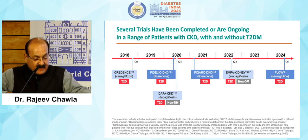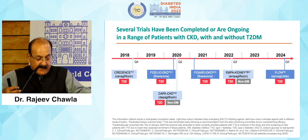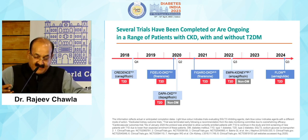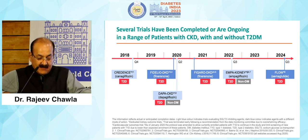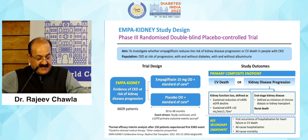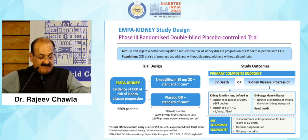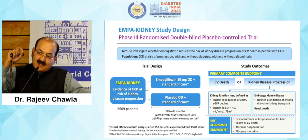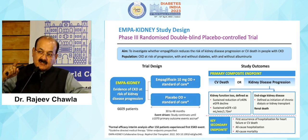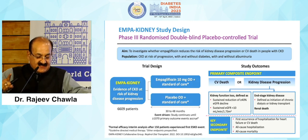This is the landscape of all trials in patients with CKD. Early trials include CREDENCE in diabetic nephropathy, Fidelio and Figaro CKD trials, and the DKD trial with finerenone published in 2021. I will be focusing on the EMPA-Kidney trial published in 2022, and another trial ongoing with semaglutide. The EMPA-Kidney study design was a phase 3 randomized double-blind placebo-controlled trial to see whether empagliflozin 10 milligram versus placebo would reduce renal composite endpoints and CV death.